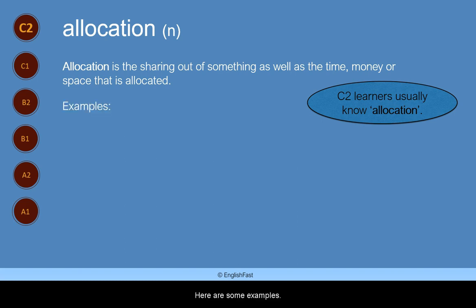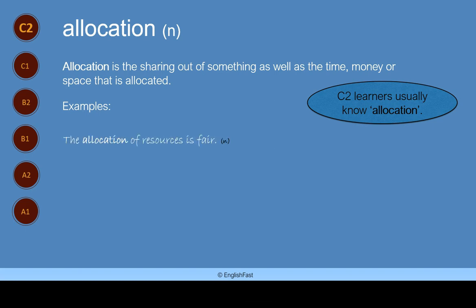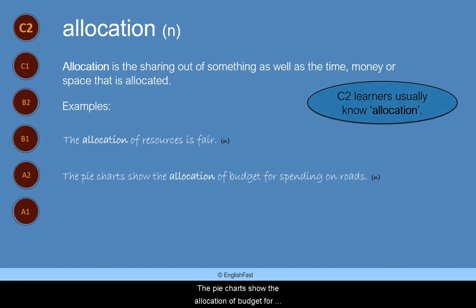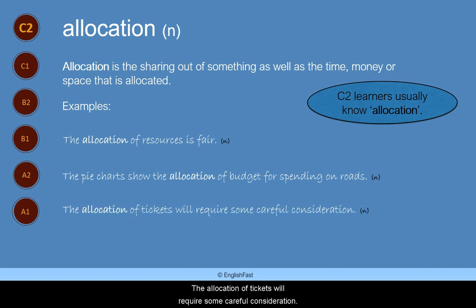Here are some examples. The allocation of resources is fair. The pie charts show the allocation of budget for spending on roads. The allocation of tickets will require some careful consideration.